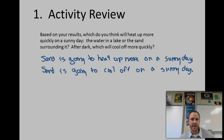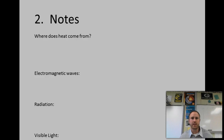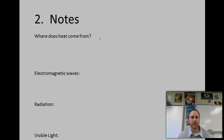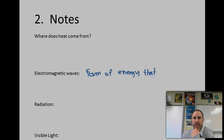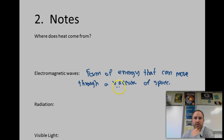So that was the overview of the lab. Now let's take a look at the notes from this section. The question we often start with is: where does the heat come from? Heat comes from something called electromagnetic waves — a form of energy that can move through a vacuum of space.